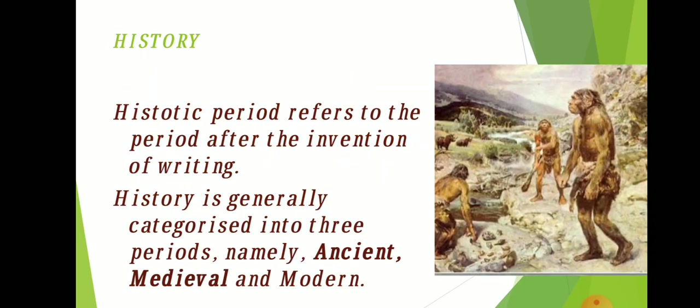The second part of history is the historic period. The historic period refers to the period after the invention of writing. Written records, dates, names of places and people may be used to know that history. On bhojpatras, palm leaves or pillars are sources of information. History is generally categorized into three periods: ancient, medieval and modern.